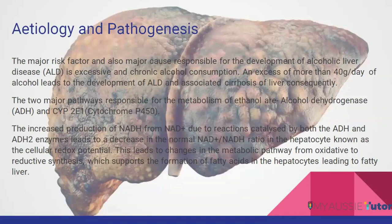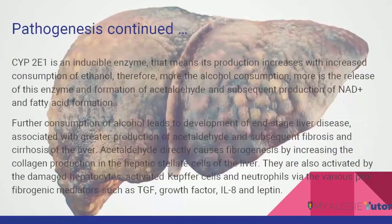This shift to a reductive pathway leads to the formation and accumulation of fatty acids in the hepatocytes of the liver, ultimately leading to fatty liver. The other pathway is the cytochrome P450 (CYP2E1) pathway, which is an inducible enzyme — its production increases with increased consumption of ethanol. The more alcohol consumed, the more this enzyme is released, leading to the formation of acetaldehyde and subsequent production of NAD+, which again leads to fatty acid formation within the hepatocyte.